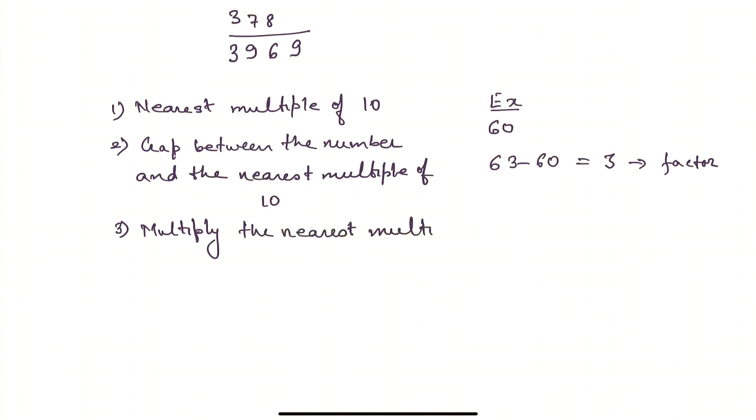So in this case what will it be? It will be 60 into 63 plus 3, which is nothing but 60 into 66. Multiplying this mentally is much easier because you can do it in your mind itself.